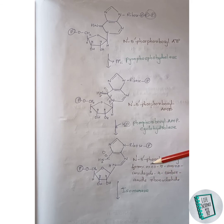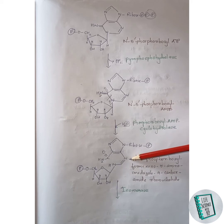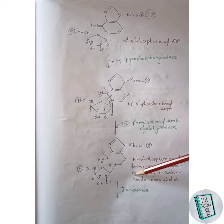In the next step, this compound gets isomerized to another form — the isomerized product is N1-5'-phosphoribosyl-formamino-5-aminoimidazole-4-carboxamide ribonucleotide.